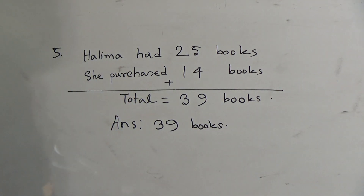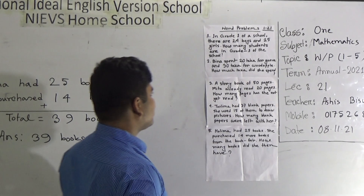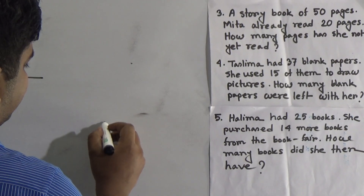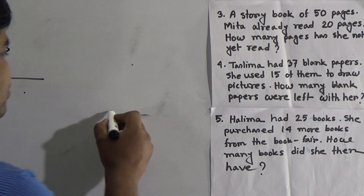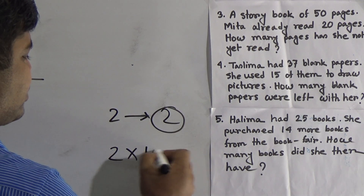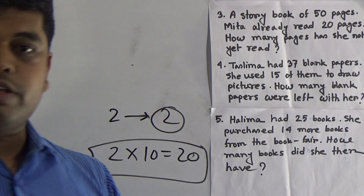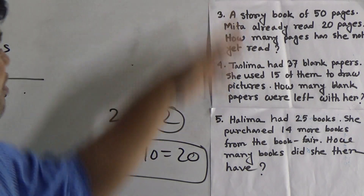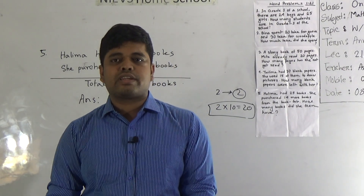This is our today's class. From these five word problems, two will appear in your question paper and you have to answer both. These two questions contain 20 marks, so you must do these word problems very carefully. If you can solve all five, you can easily get 20 marks. Keep practicing at home and abide by your parents. See you soon. Assalamu Alaikum.